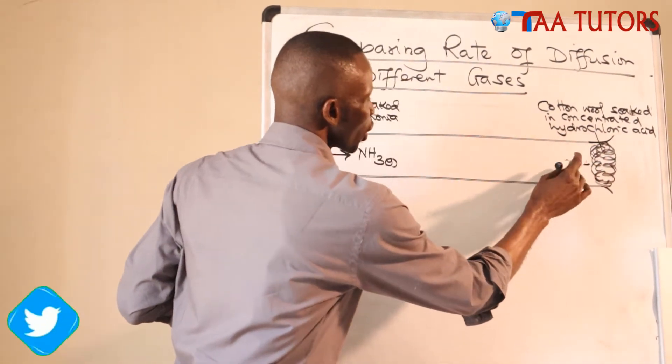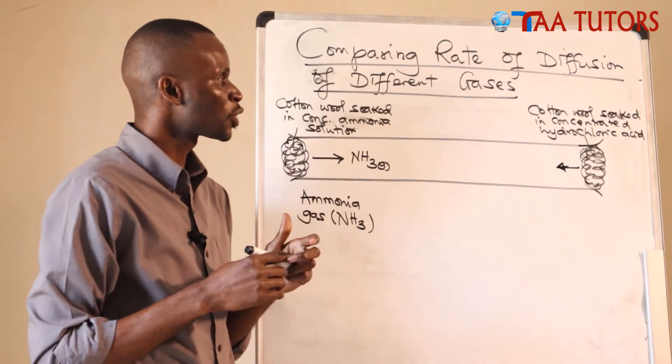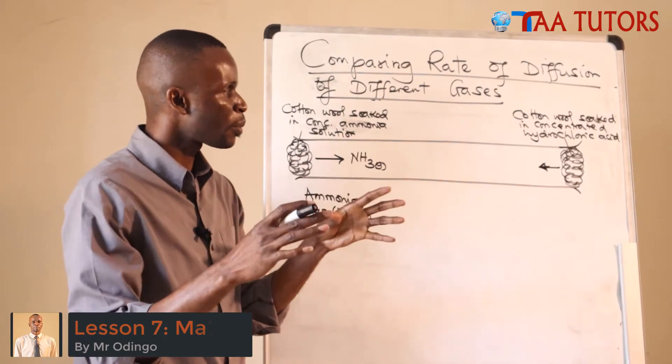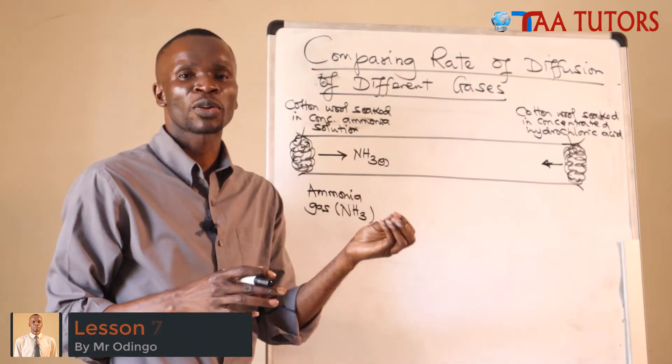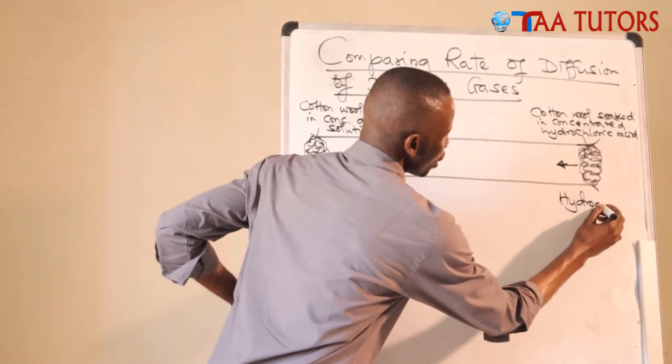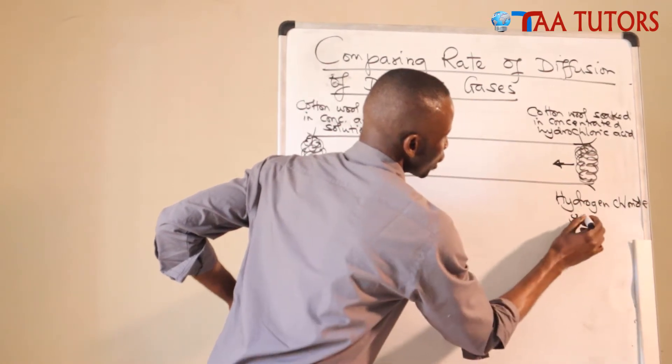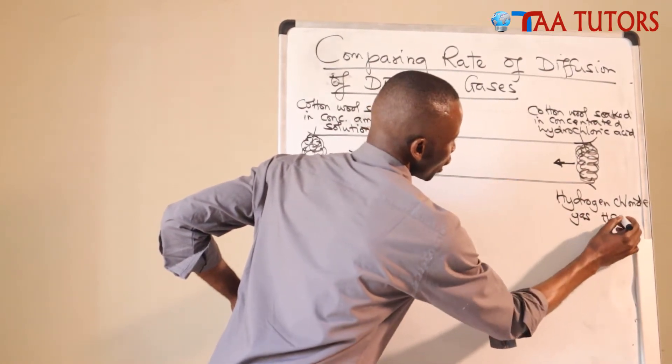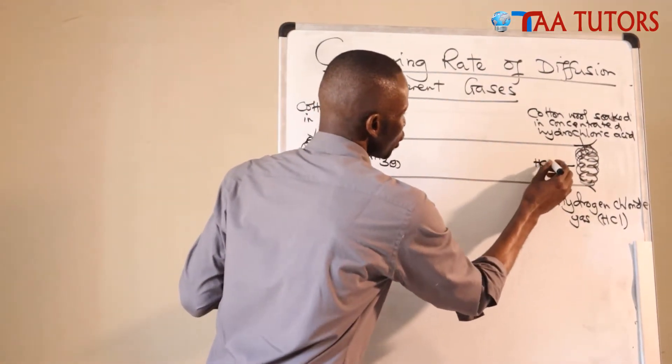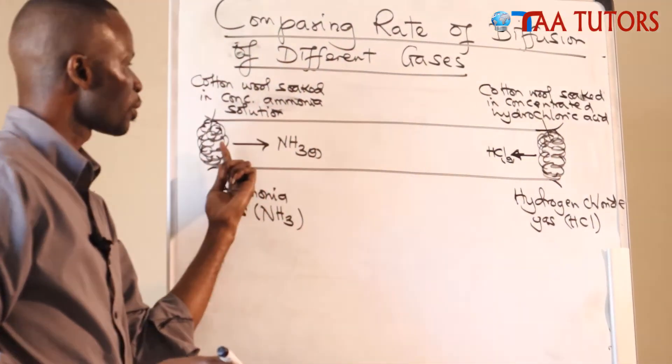On this other side again, hydrochloric acid has the same problem as ammonia. It also breaks down. The hydrochloric acid is not very stable, not a very stable acid like sulfuric acid. When you keep it in a container and you leave it open, fumes of hydrogen chloride gas will come out. So this other side, we have hydrogen chloride gas, HCl. Hydrogen chloride gas will be emitted from this other side. So hydrogen chloride gas will come from the other end. This one will come from this other end.